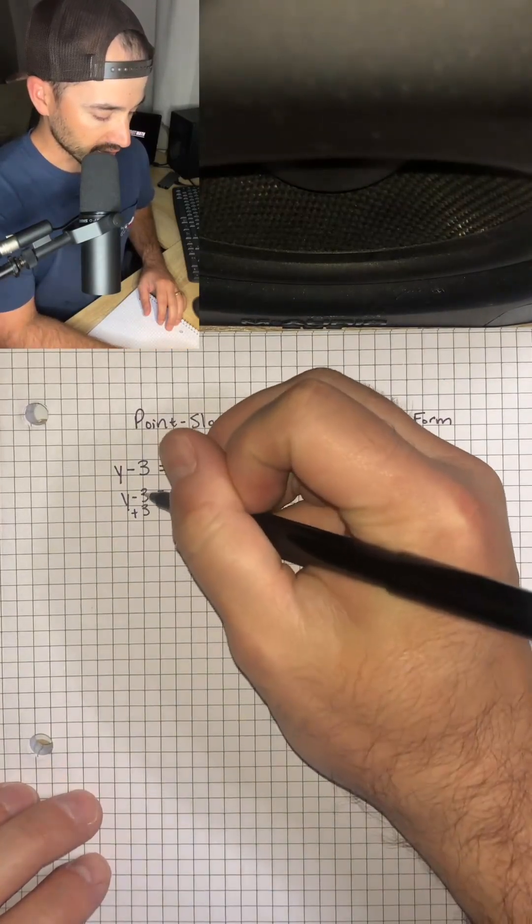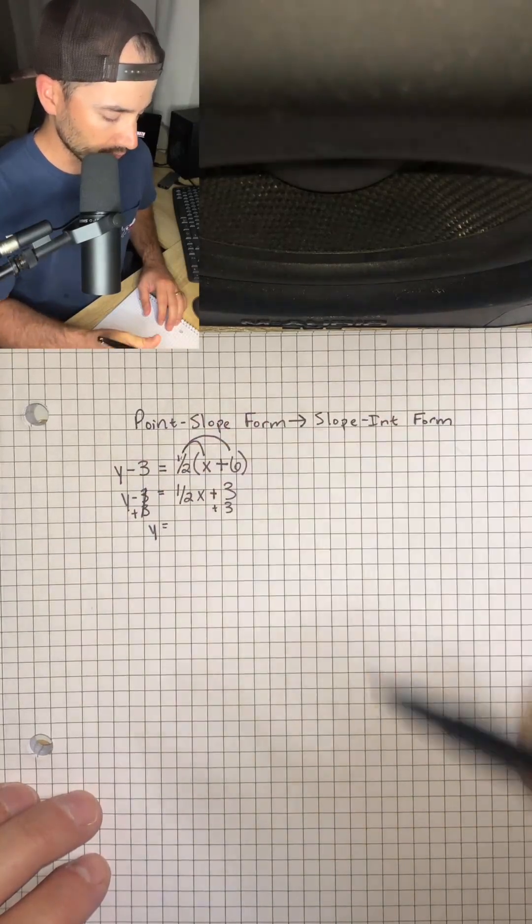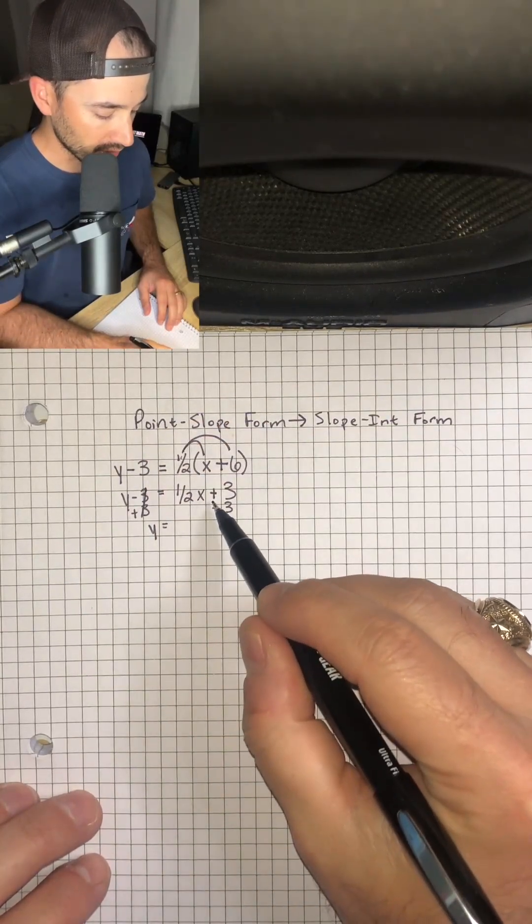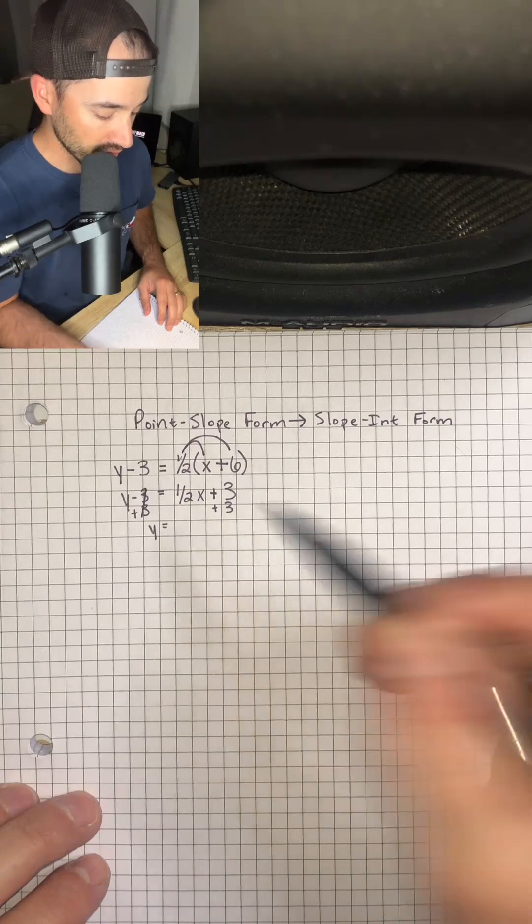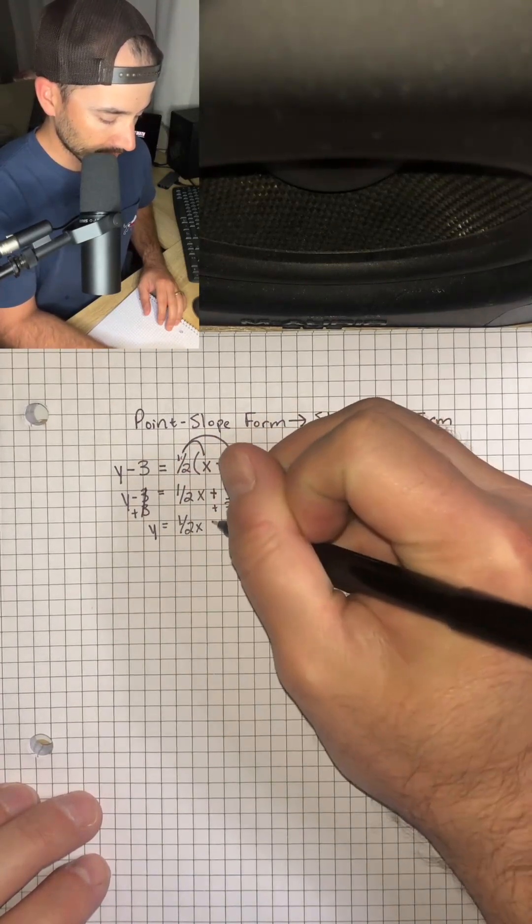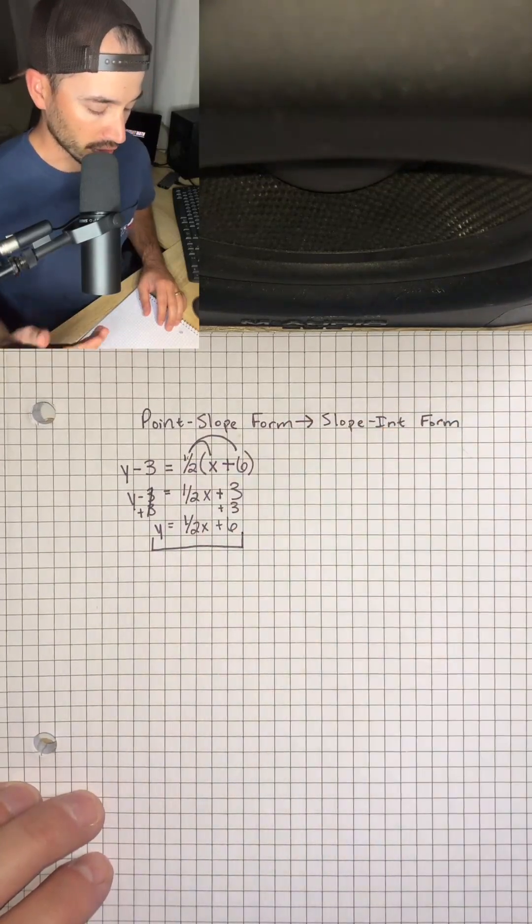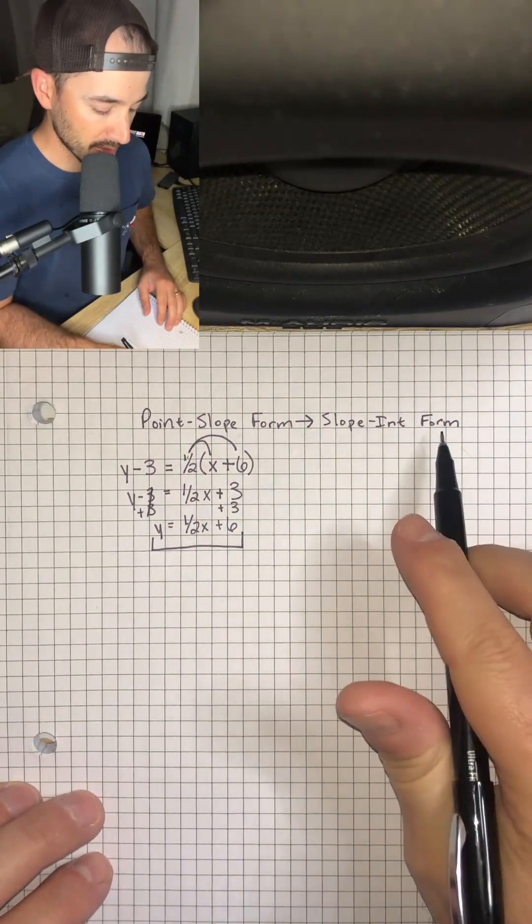So these 3's are going to cancel on the left and leave us with y is equal to 1 half x plus 3 plus 3 is 6. So we're going to have 1 half x plus 6, and that would be our new equation in slope-intercept form.